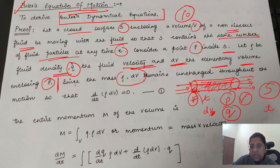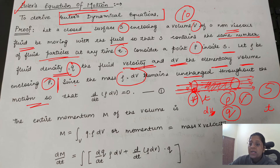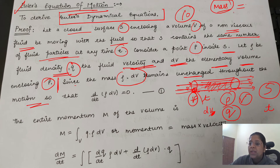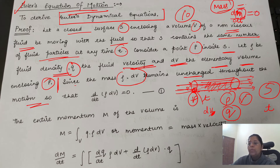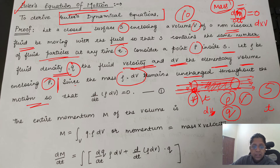Since the mass ρ·dV remains unchanged throughout the motion — मतलब movement of fluid particles का — जो mass है वो unchanged रहा है। इसका मतलब rate of change of mass zero है, यानि dm/dt = 0। Mass का formula है density into volume, तो यहाँ लिखेंगे: d(ρ·dV)/dt = 0। यह equation number 1 है।